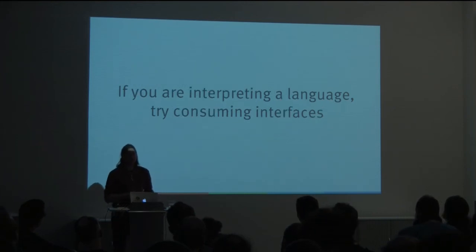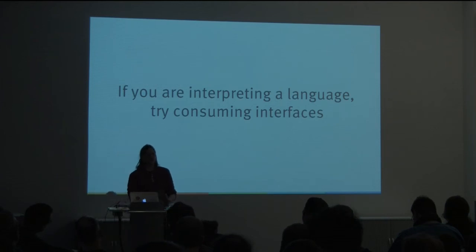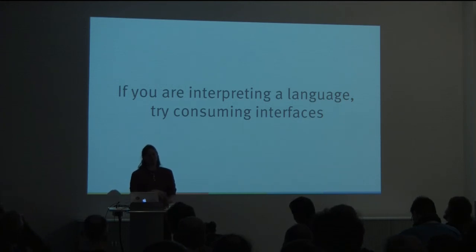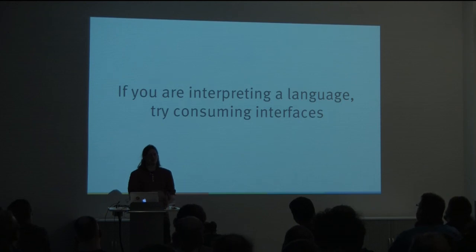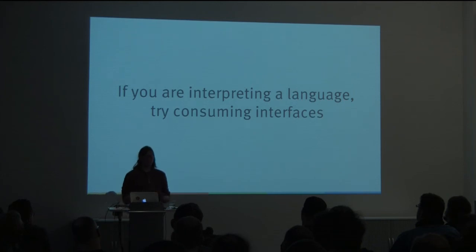On the other hand, if you're interpreting a language, you should try consuming interfaces. Again, these are really both applications of the Robustness Principle. If you're consuming a language, it's usually either the case that you're providing the language yourself — like you've written a test generation library and also written the type class interface of test generation strategies. In that case, providing that strategy as an interface and just relying on it gives you the flexibility to adapt your internal structures, as long as the generators you create still satisfy the interface.